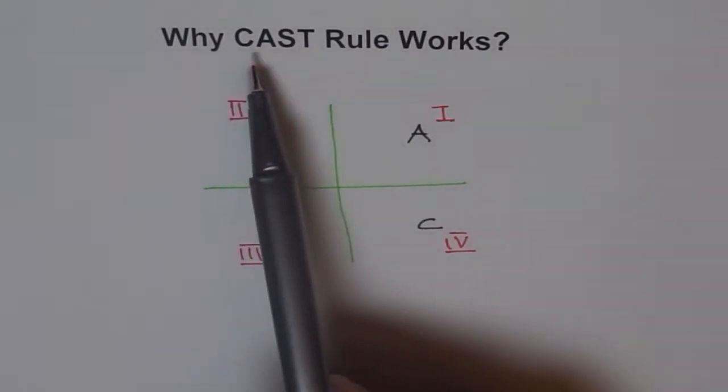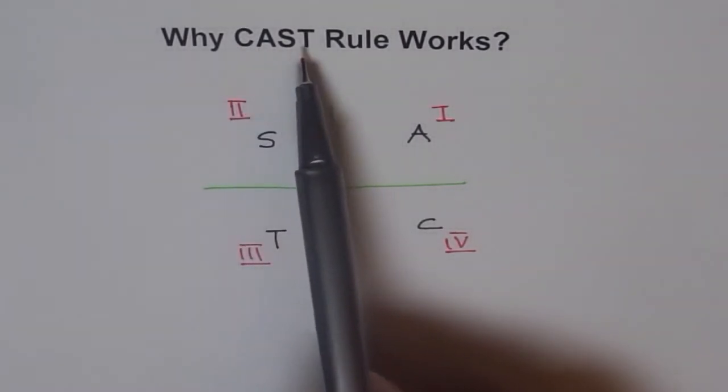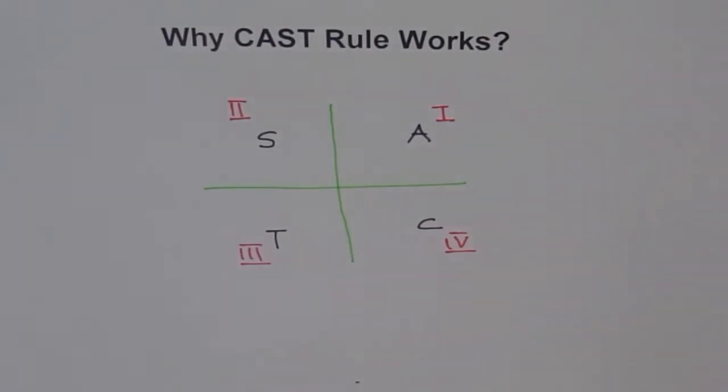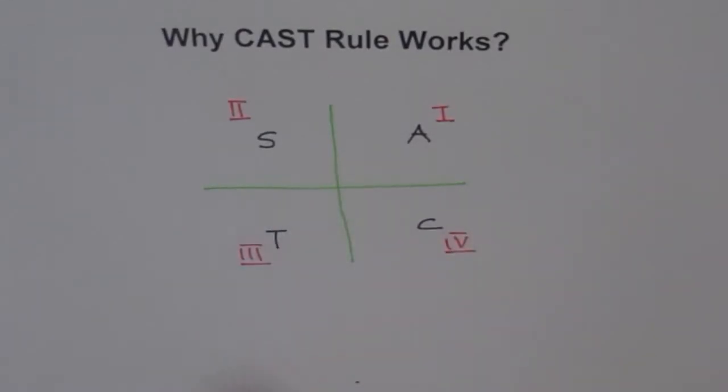CAST rule, so they think it starts with 1, 2, 3, and 4. That's a huge mistake, right? Fundamentally wrong. Well, but in North America, CAST rule is the most popular rule to remember which trigonometric function is positive in which quadrant.